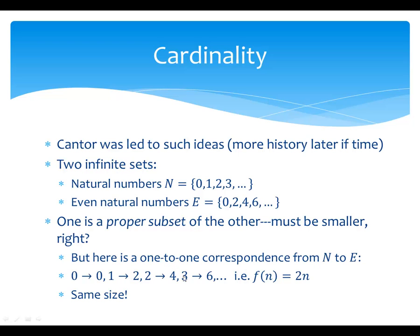By definition, you create exactly all the even numbers from that. Each natural number corresponds to its double in the even numbers. Every even number gets hit, nothing gets hit twice, everything lines up. So if we accept the idea of one-to-one correspondence — which seemed perfectly reasonable for finite sets — as saying these are the same size, then we're saying this set is the same size as a proper subset of itself. You can take this infinite set, throw away the odd numbers, and yet get something the same size.